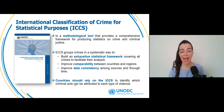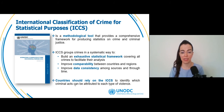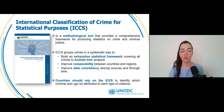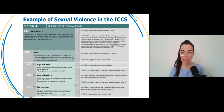The ICCS is a methodological tool that helps improve the quality of statistics for monitoring and evaluating public policies. It provides a comprehensive framework for producing statistics on crime and criminal justice by grouping crimes in a systematic way to facilitate their analysis. Implementing the ICCS improves comparability between countries, data consistency among different sources, and through time. Countries should rely on the ICCS to identify which criminal acts can be attributed to each type of violence under Indicator 1613. This slide shows an extract of the ICCS on sexual violence that can help countries identify which crimes should be included in SDG Indicator 1613C, sexual violence.